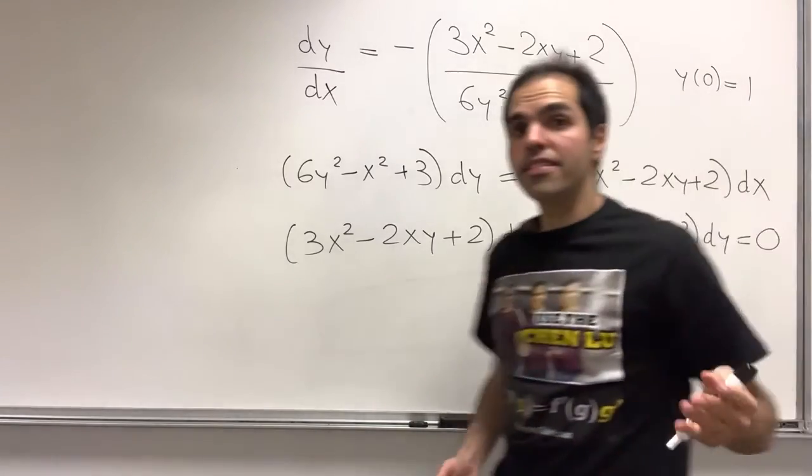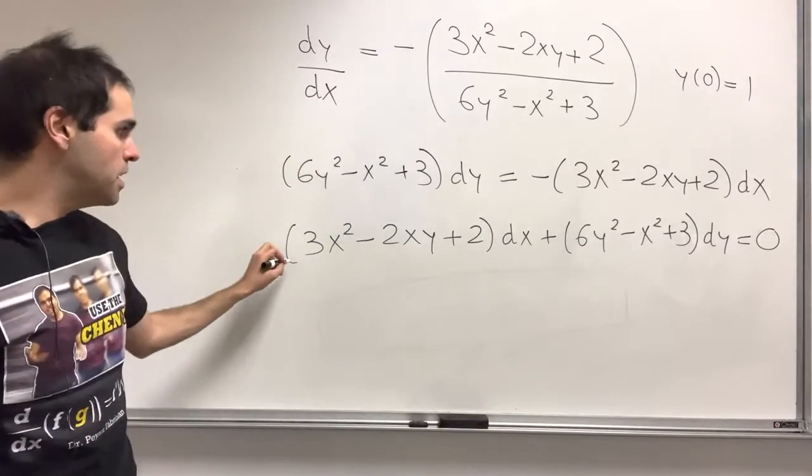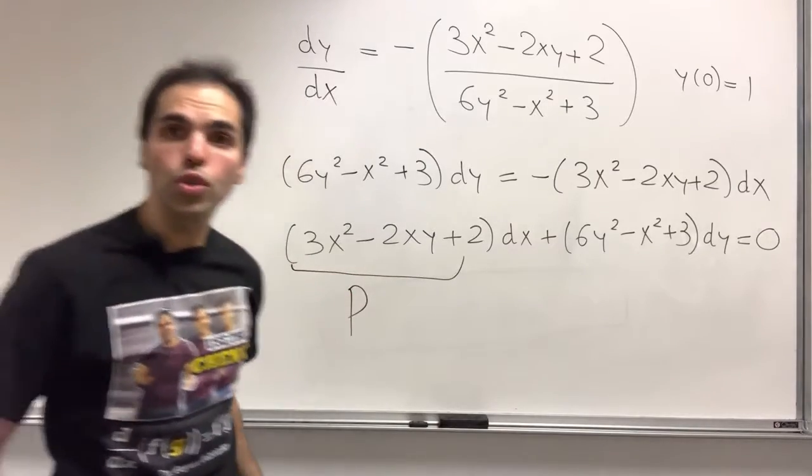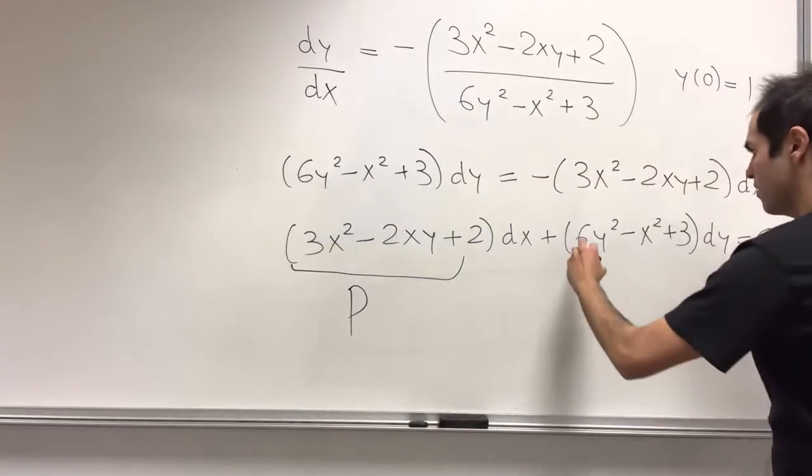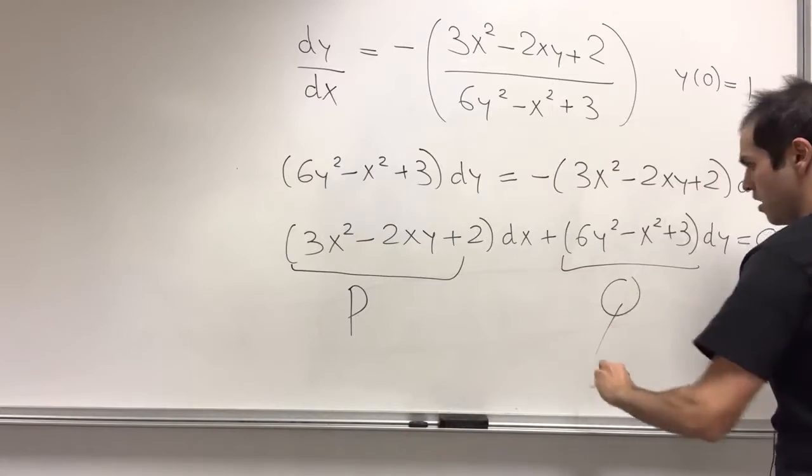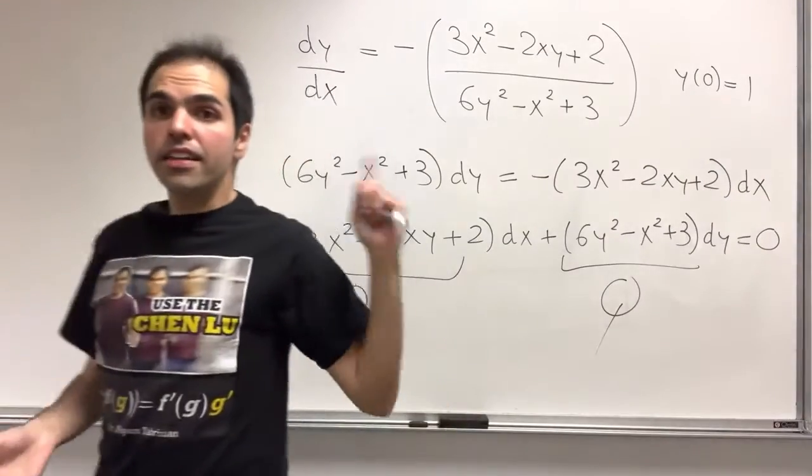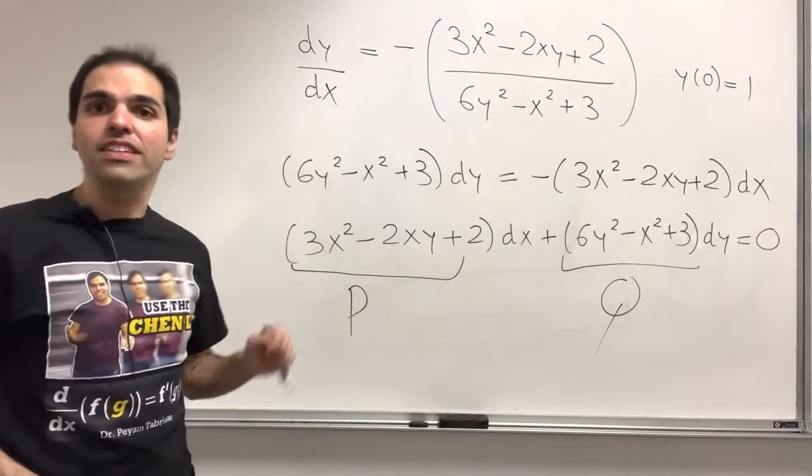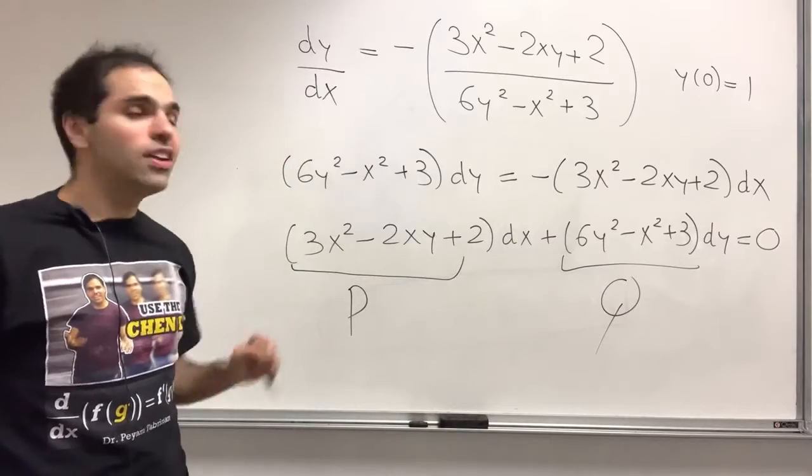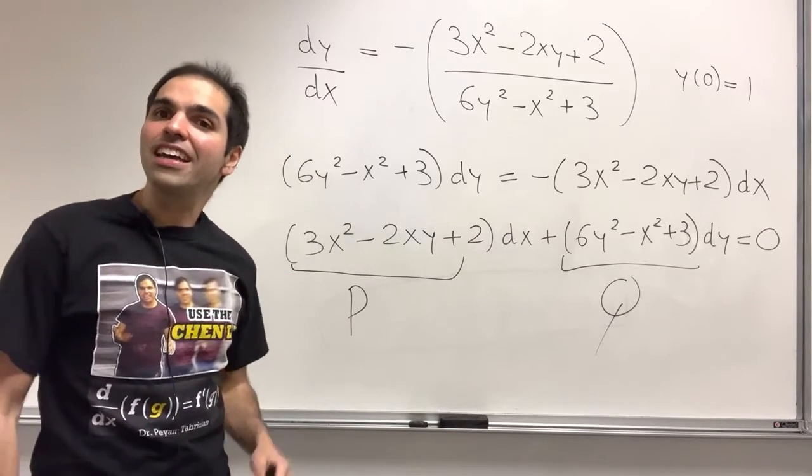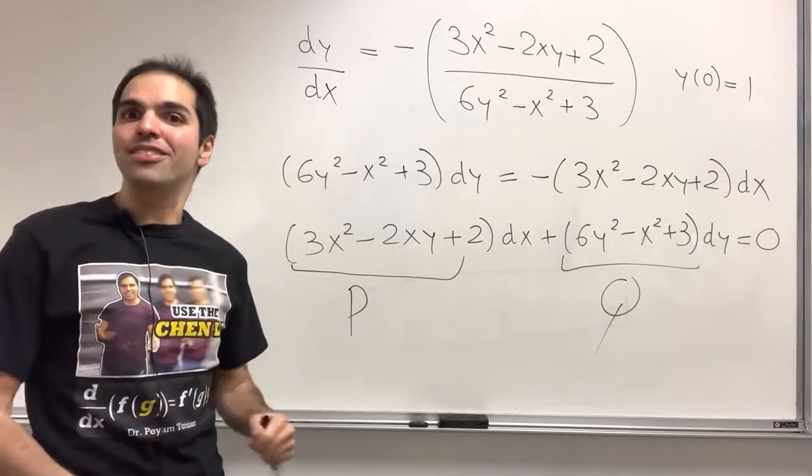And this is now of the form P dx plus Q dy. And the next step is to check if this equation is exact. In other words, all we need to check is that P_y is Q_x.